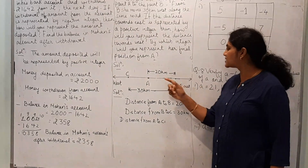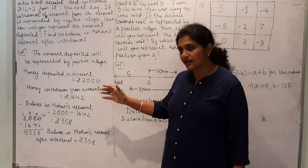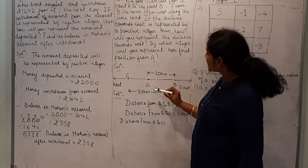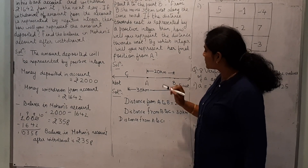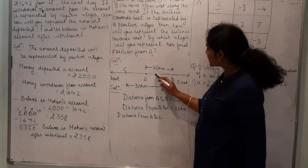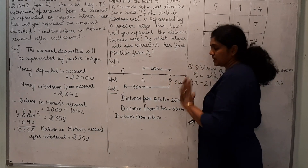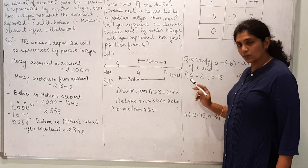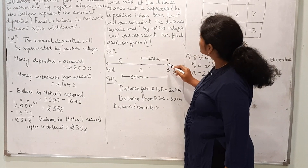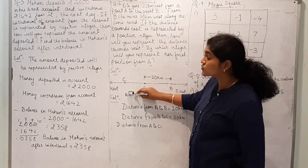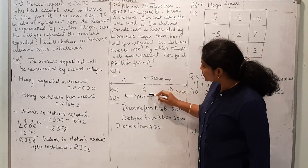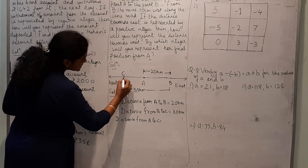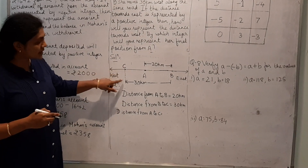If the answer is positive, the distance is towards east from A; if negative, it is towards west. Looking at the figure, Rita goes 20 km east from A to point B. Distance from A to B is 20 km. Then from B, she moves 30 km towards west, reaching the final position point C.